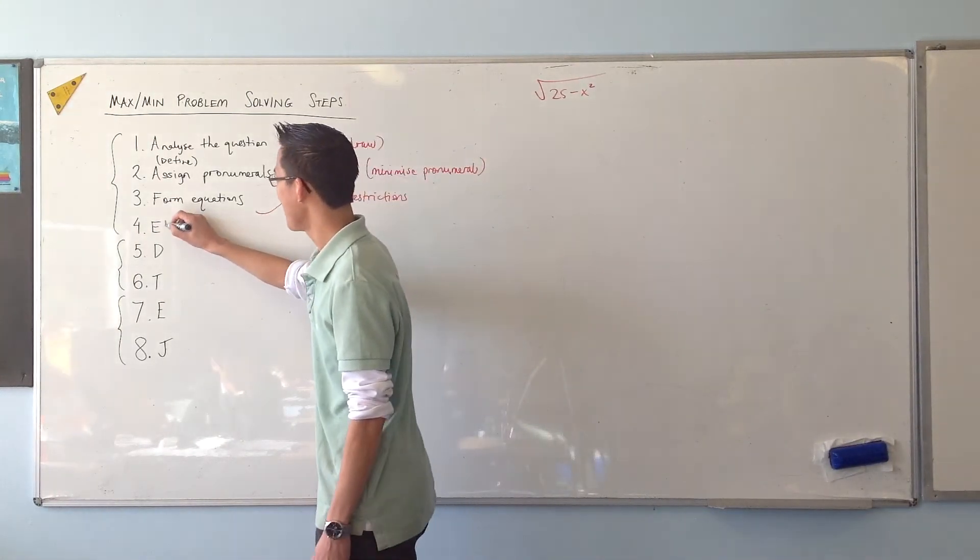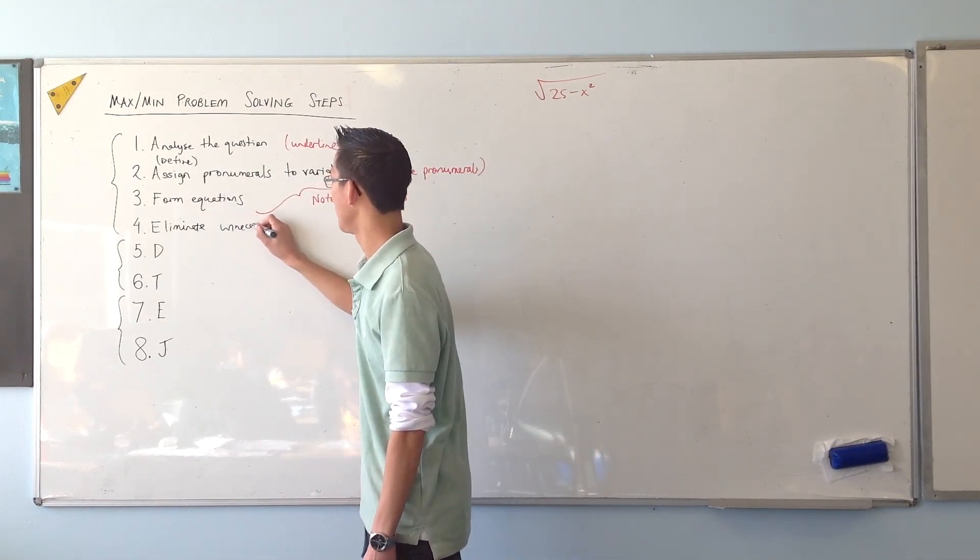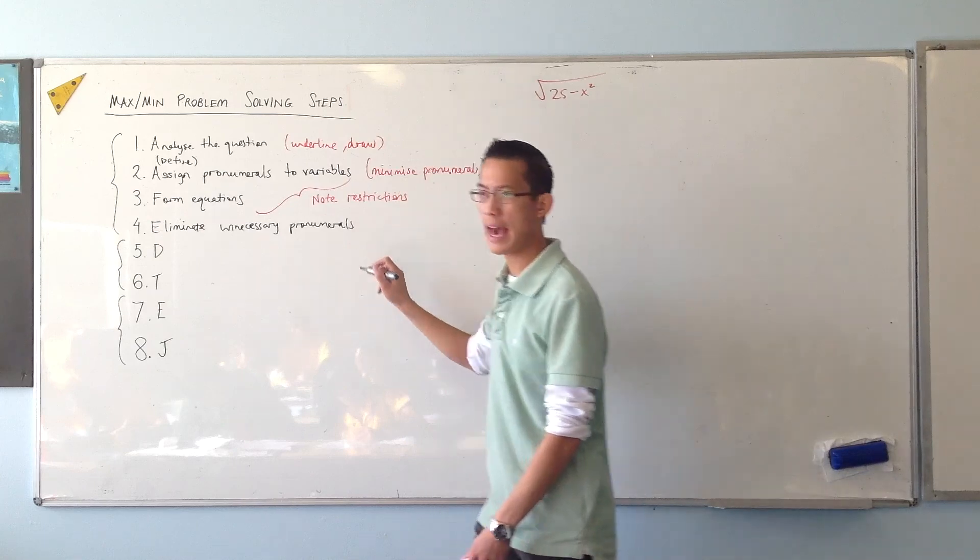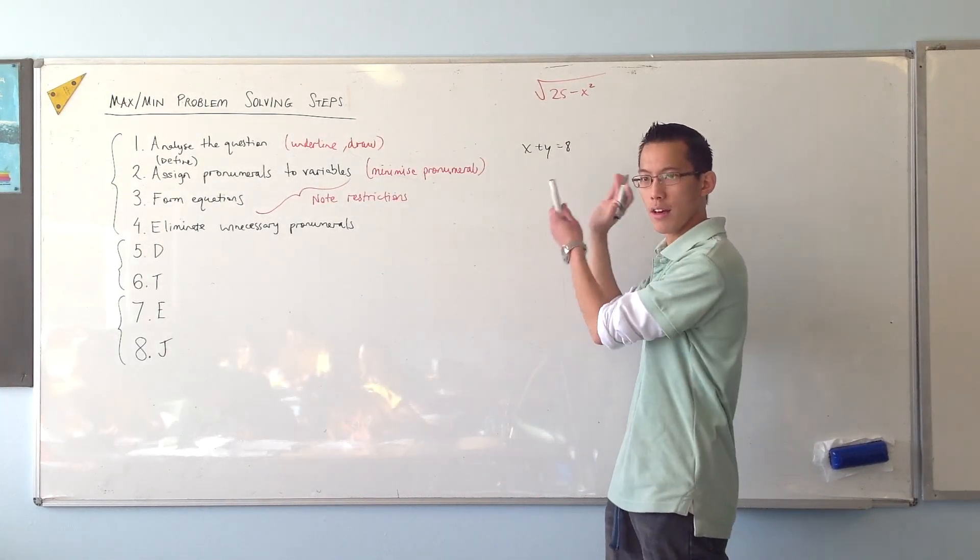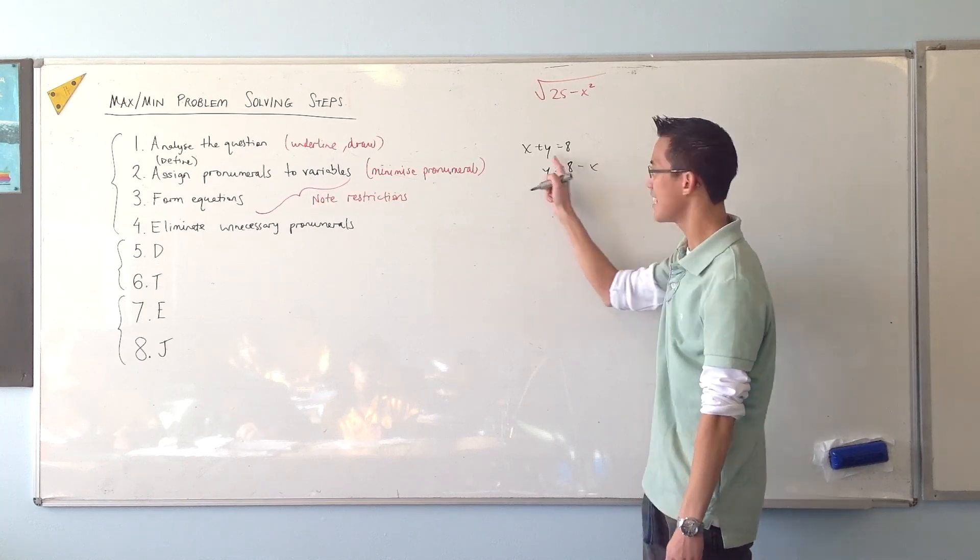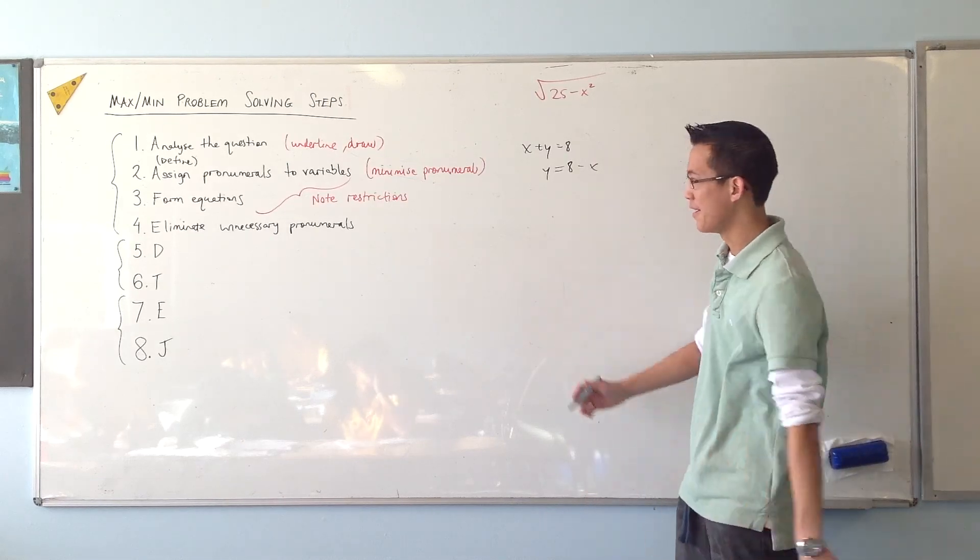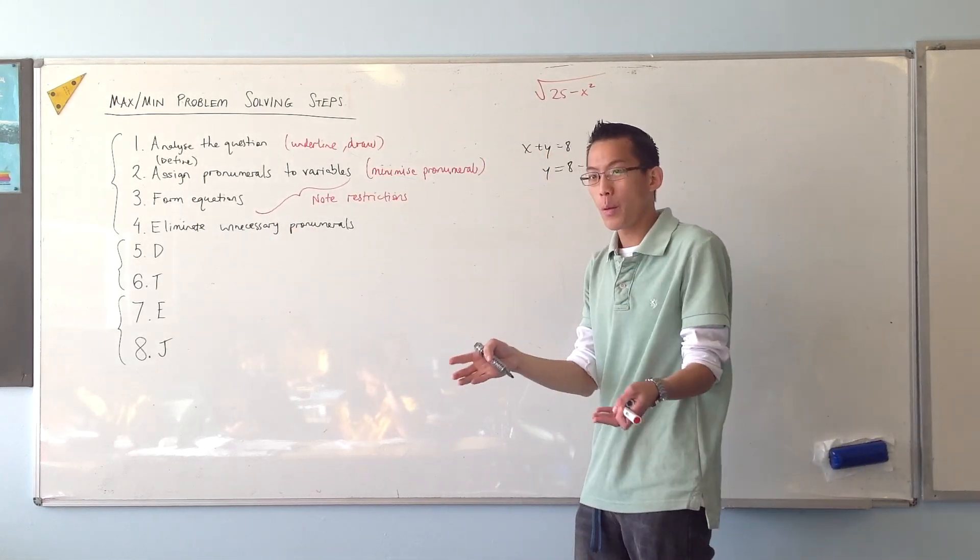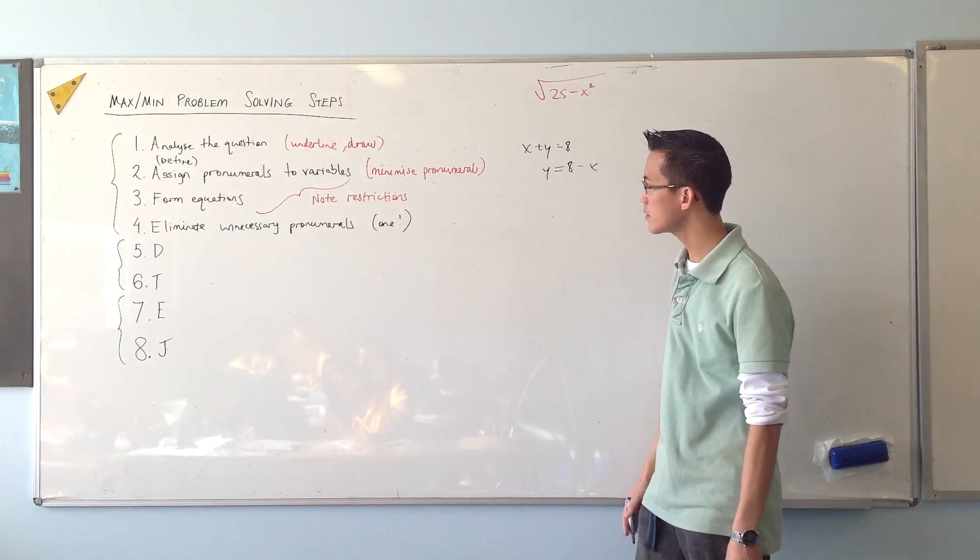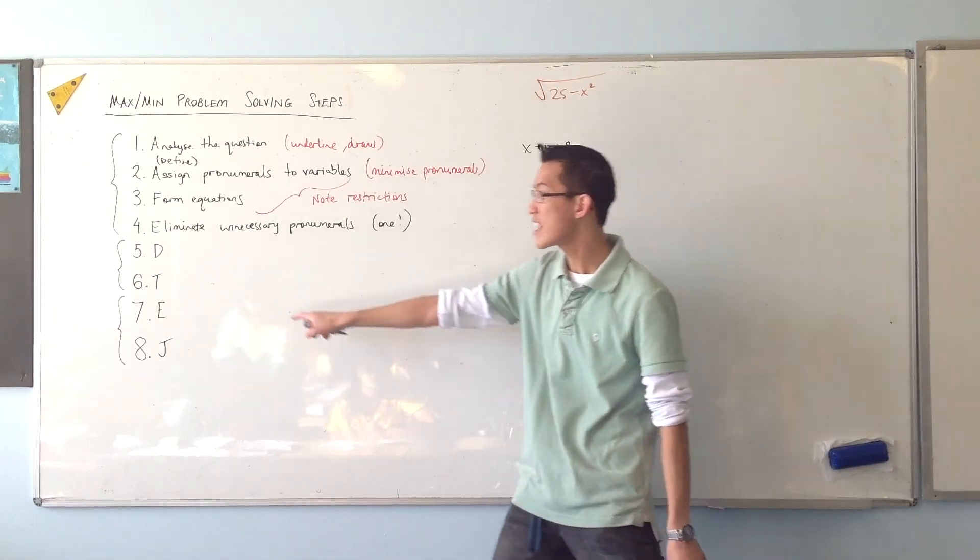All right, what does E stand for? E stands for eliminate any unnecessary pronumerals or variables. Eliminate unnecessary pronumerals. And we were doing this before, you know, we had x plus y equals 8. That was a nice way to form an equation off what was in the question. But a better way to do it is to say, well look, I don't really need two variables here. I don't need two pronumerals. I can get them all in terms of one, and I think we did it in terms of y. So wherever you can get rid of them, and really what we want to end up with is just one. You want to get down to one. You want the quantity that you want to maximize or minimize, you want it in terms of one variable and one only, because that'll let you do the next step.